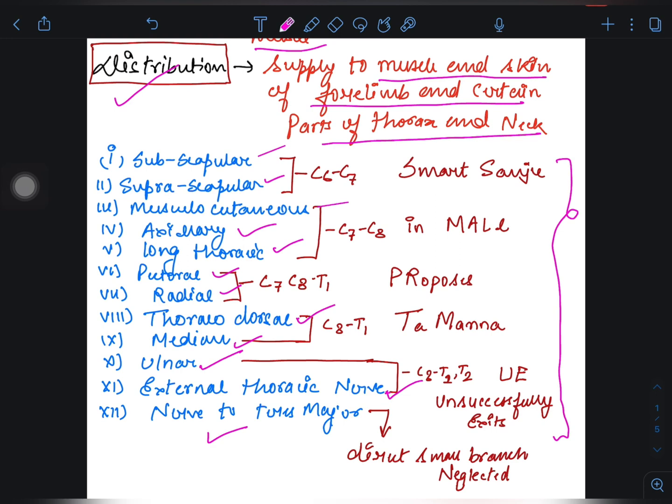So let's read what the trick is. So the trick is there is a boy, his name is Sanju, and he likes a girl called Tamanna. So it's related to him. Now, Smart Sanju In MALL Proposes Tamanna Unsuccessfully Exits Neglected. Now he proposes Tamanna in mall, but Tamanna refuses his proposal. So again I'll be repeating the mnemonic: Smart Sanju In MALL Proposes Tamanna Unsuccessfully Exits Neglected.